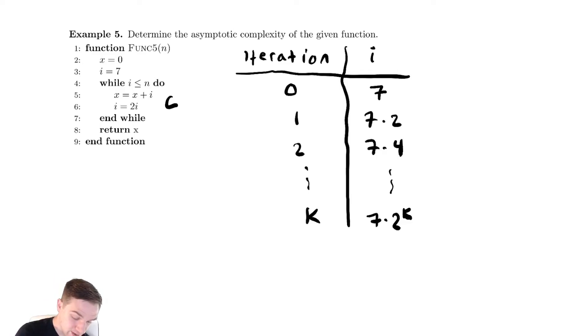So this stops when the thing that we got from the formula, 7 times 2 to the k, is equal to our stopping condition, which is again n. Let's solve that for k. That's going to be n.